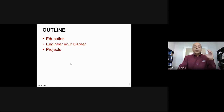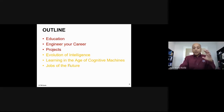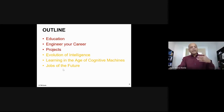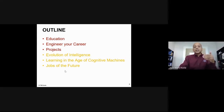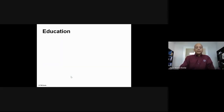I'll show a bunch of projects — not to describe each one in depth, but to show the breadth of what you can do if you graduate from GCT. The second block covers how intelligence evolved in human society, how we should learn in the age of cognitive machines, and what jobs look like in the future. Then we'll take a break, open for Q&A, and finally conclude with education models.